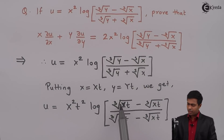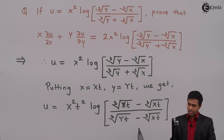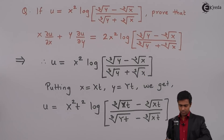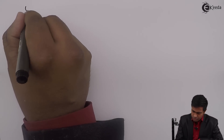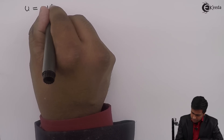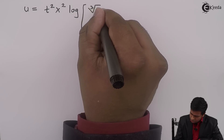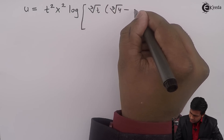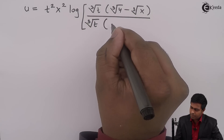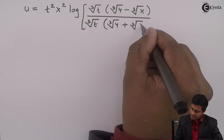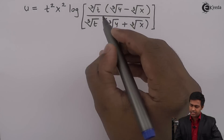From the numerator we can take cube root of t as a common factor, and similarly cube root of t from the denominator. So we get u equal to t squared x squared times log of, with cube root of t common in the numerator giving (cube root of y minus cube root of x), and cube root of t common in the denominator giving (cube root of y plus cube root of x). The cube root of t cancels from numerator and denominator.